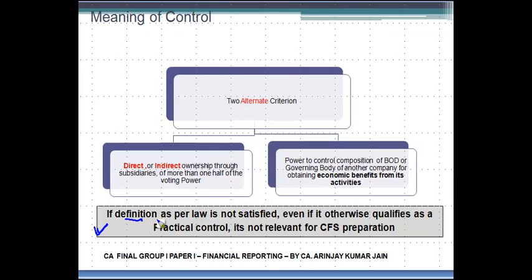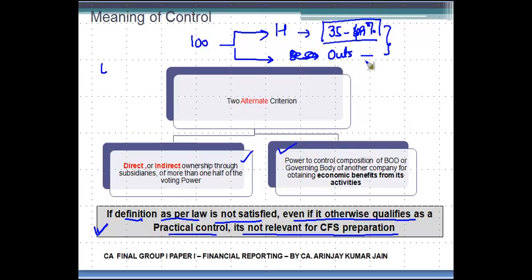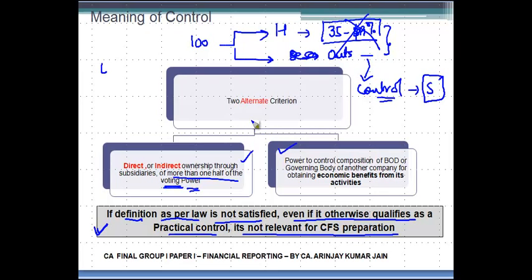If the legal definition of control — either criterion A or B — is not satisfied, then even if it otherwise qualifies as practical control, it is not relevant for CFS preparation. For example, if H Limited holds 35% to 49% and outside shareholders own the balance, H Limited may be the single largest shareholder and practically have control over S Limited. But because the law requires more than one half of the voting power, and that is not the case here, you are not supposed to consolidate it. Practical control does not suffice — the legal definition must be satisfied.